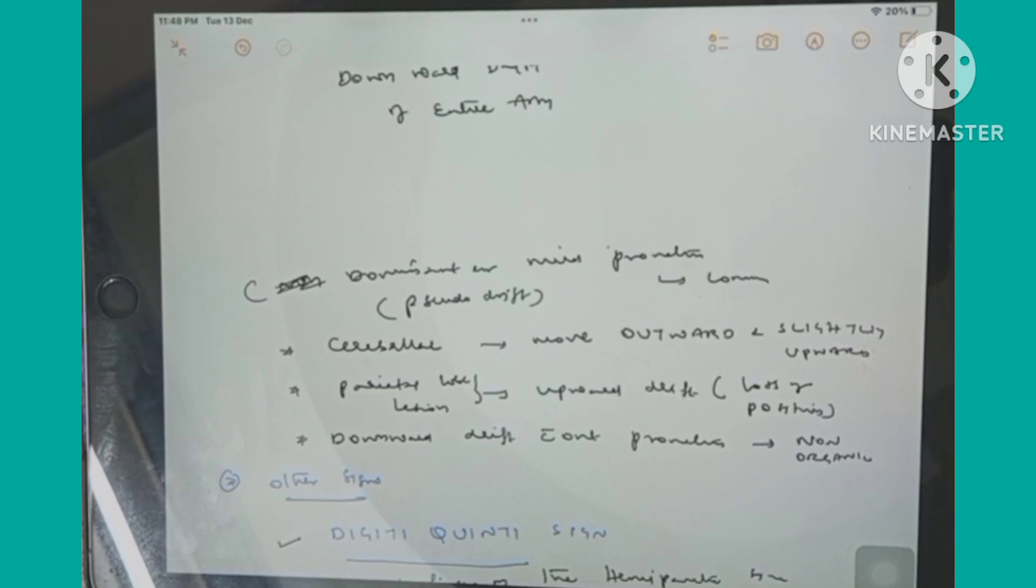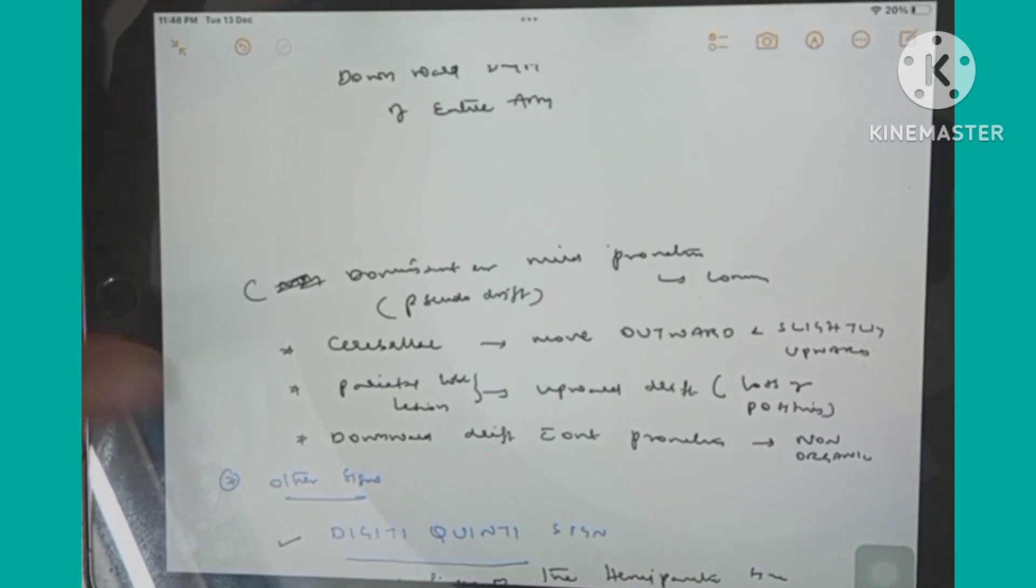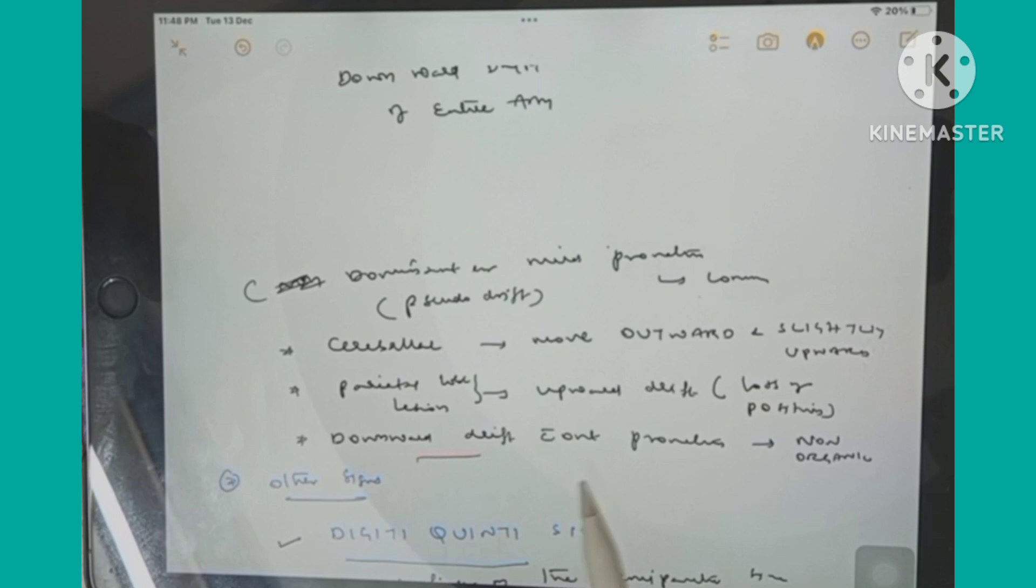And what is parietal drift? That is upward drift of the arm due to loss of position. Then what is downward drift without pronation? That is due to non-organic weakness. Thank you guys, please subscribe.